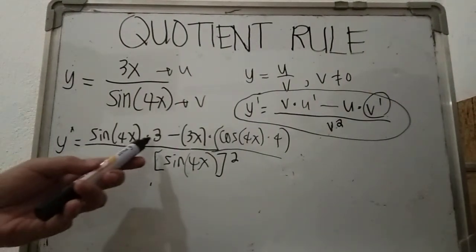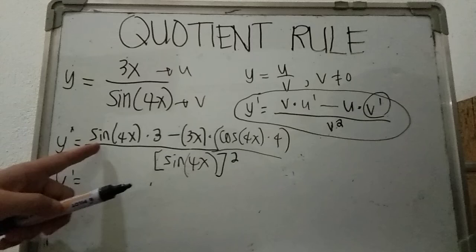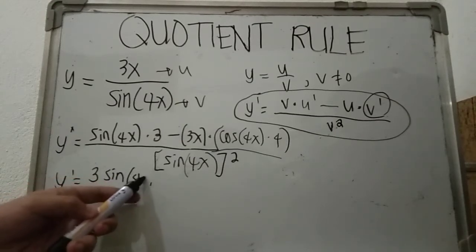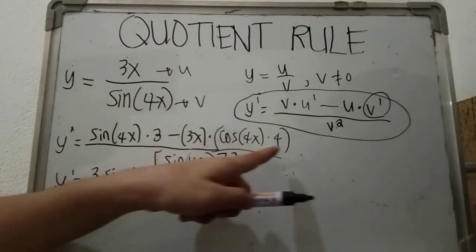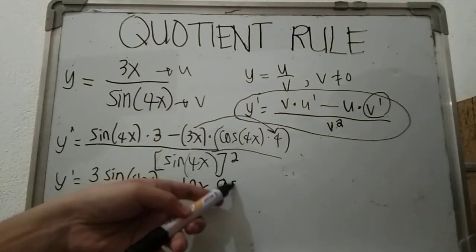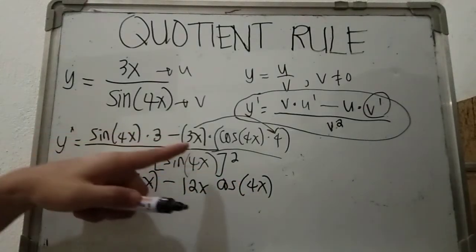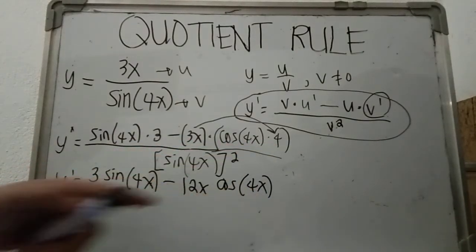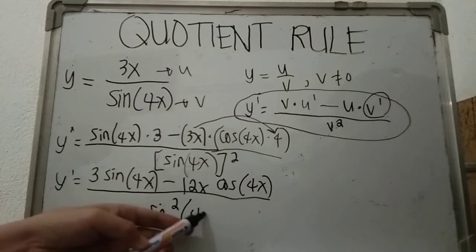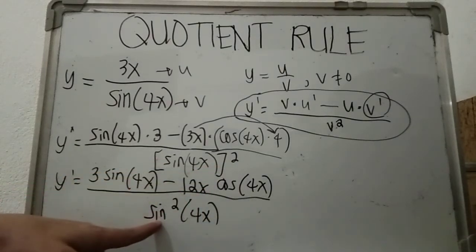Simplifying: 3 times sine 4x — note you are not allowed to multiply 3 and 4x because sine and 4x serve as one function, so we copy 3 sine 4x. Then, minus 3x times 4, which gives 12x, and copy cosine 4x. So we have 3 sine 4x minus 12x cosine 4x, all over sine squared 4x. Note that sine 4x raised to the power of 2 can be written as sine squared 4x.